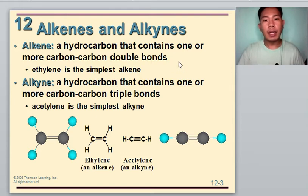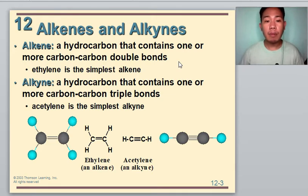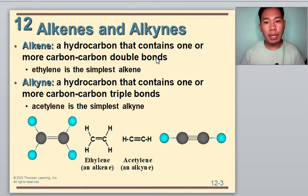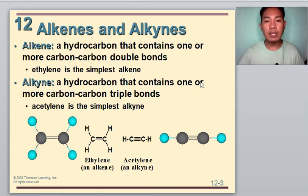Alkenes are hydrocarbons that contain one or more carbon-carbon double bonds. The simplest alkene, which is readily available in the environment or from nature, is ethylene. This ethylene is abundant, particularly in plant parts, and is usually a plant growth regulator. Ethylene is also important in fruit ripening. That is why in some areas in the Philippines, they use cacawati leaves in ripening their bananas, because the cacawati leaves contain a high amount of ethylene for ripening.